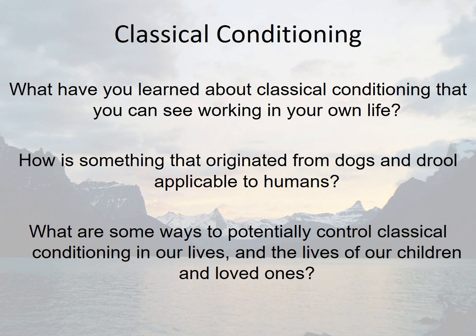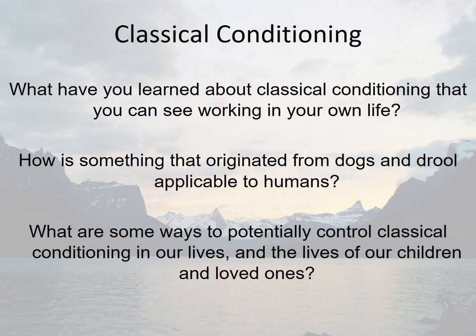Now that we've wrapped things up, let's discuss what you've learned about classical conditioning. How can you see it working in your life or the lives of people you know — your friends, your family? How did something that originated from such simple and basic means become applicable to humans, and are there other examples of science intended for a different population that becomes very relevant to us? Once we understand classical conditioning, and how it can be problematic in terms of causing us to be afraid of things we shouldn't be, or sick to things we shouldn't naturally respond to — how can we control classical conditioning, especially for our children and loved ones, so that maybe it doesn't affect us negatively as much as it otherwise might?